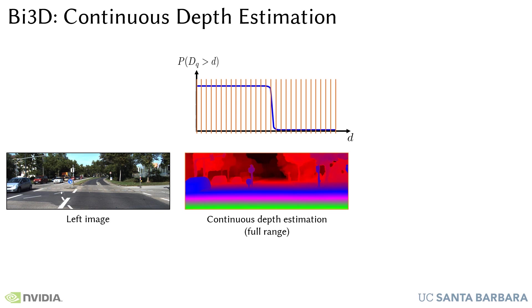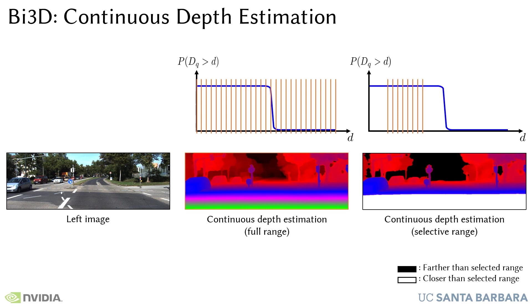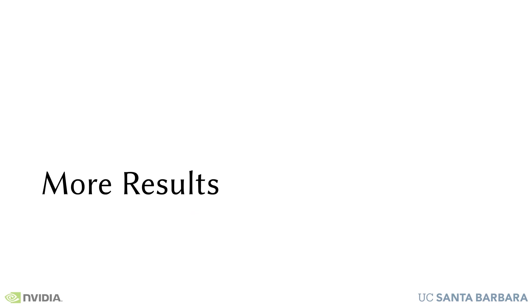By uniformly sampling the disparities, we can train our approach to estimate continuous depth like existing approaches and achieve competitive results on standard datasets. However, unlike previous approaches, we offer more flexibility. We can estimate depth in a specific range defined at inference time. Out-of-range objects are seamlessly estimated as lying beyond the farthest plane or in front of the closest plane. Next, we show some additional results of our approach.